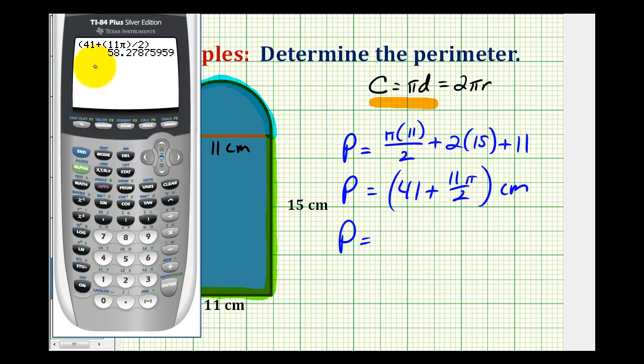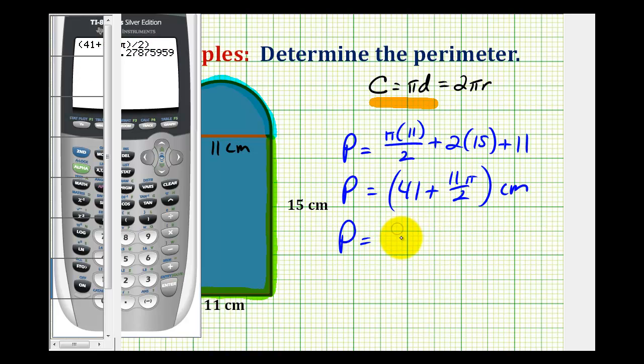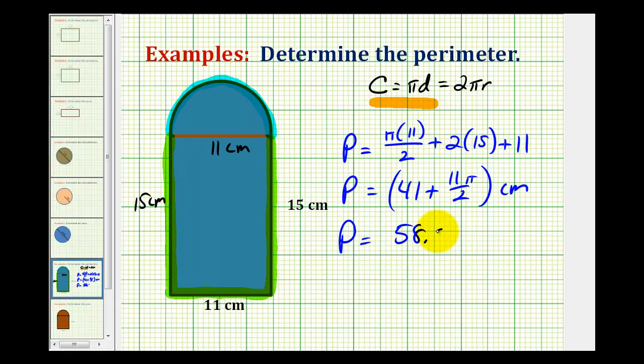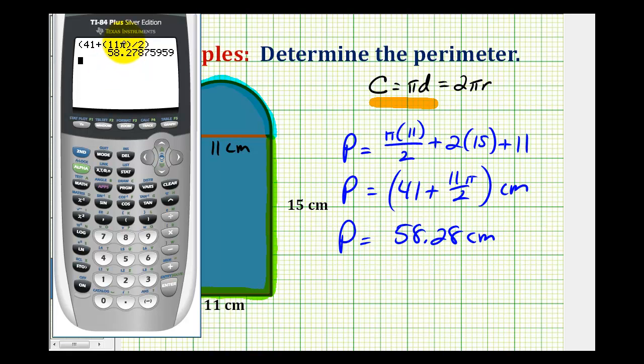So if we round this to the nearest hundredth, the perimeter would be approximately 58.28 centimeters. Now I do want to mention, if we round pi before we calculate this, it is going to result in more of an error, and I'll go ahead and just show that.